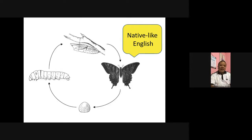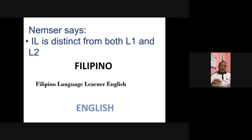That's the idea of interlanguage. According to Nemser, interlanguage is distinct from both the first language and the second language. So if you have Filipino and you try to learn English, you have an interlanguage. What you know is not yet English — it's an approximation of English. It's not Filipino, it's not English; it's distinct from both.